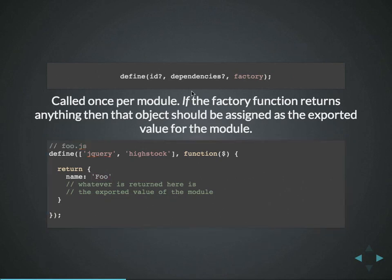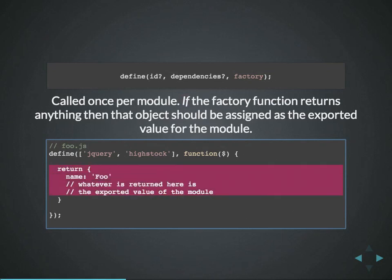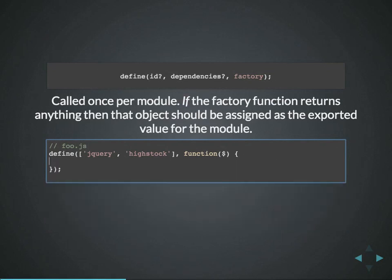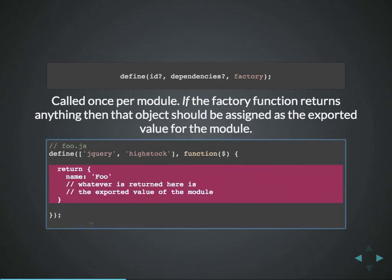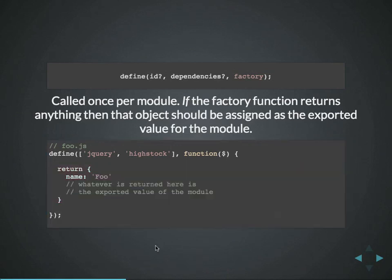The word 'if' is important here — if the factory function returns anything, that object should be the exported value. You don't necessarily have to return anything. For jQuery plugins, for instance, they don't return anything at all — they just load in jQuery and add a new function to the jQuery object. Not everything is going to return a value, so that's just something to keep in mind.